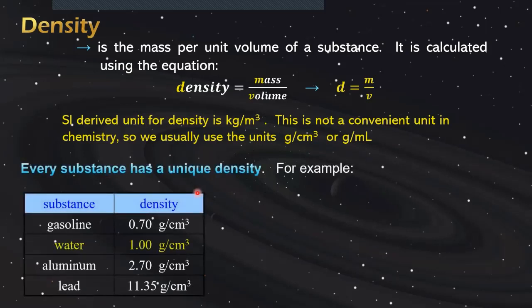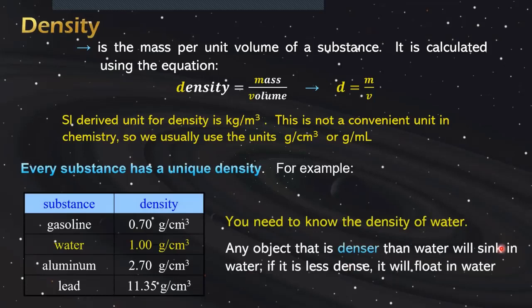Every substance has a unique density. For example, the density of gasoline is 0.70 grams per cubic centimeter. For water, 1 gram per cubic centimeter. Aluminum, 2.7 grams per cubic centimeter. And lead is 11.35 grams per cubic centimeter. You need to know the density of water. Any object that is denser than water will sink in water. If it is less dense, then it will float in water.